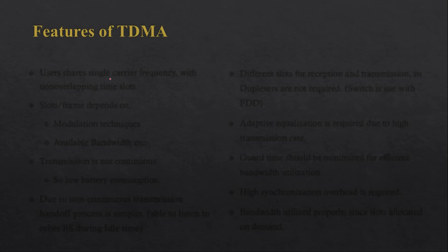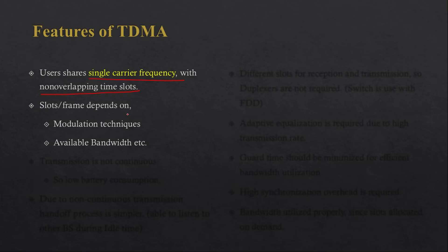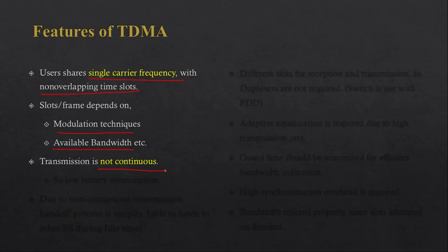The first feature of TDMA is that users share a single carrier frequency — the full frequency band is used for transmission and reception. Users are divided only in terms of non-overlapping time slots. The slot and frame structure depend on the modulation technique and available bandwidth. Transmission is non-continuous but at high speed to appear continuous. One advantage of non-continuous transmission is that when a user is idle, power is saved, reducing battery consumption.